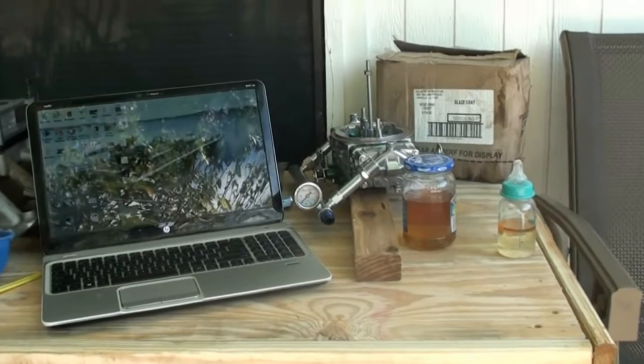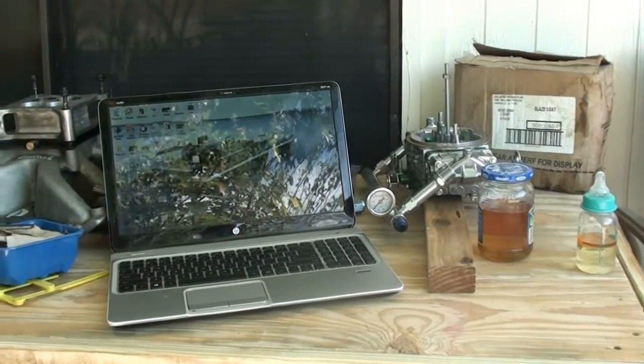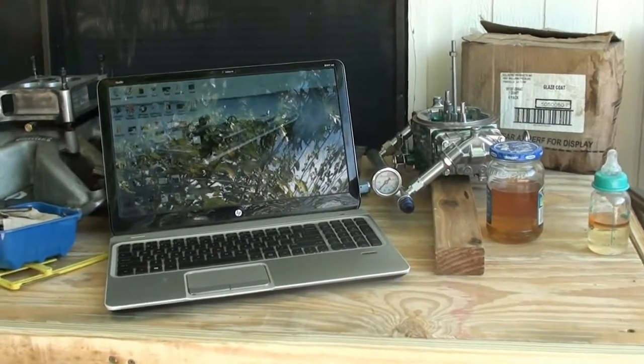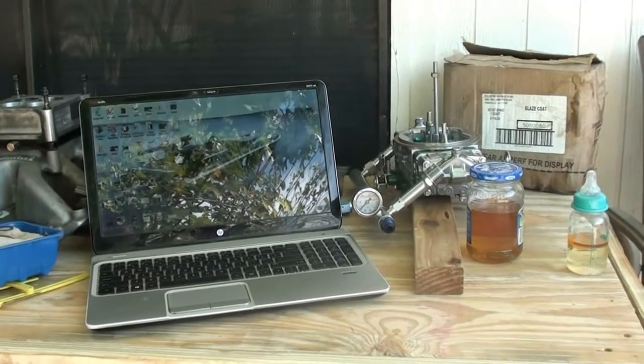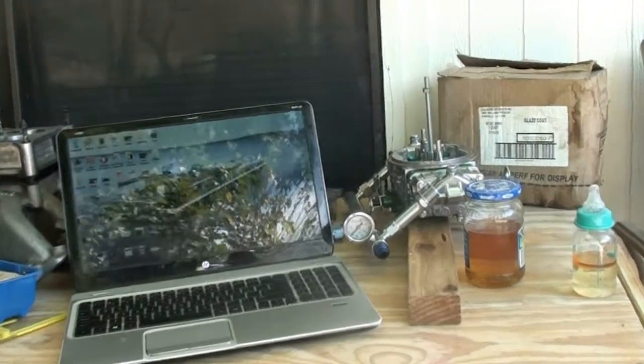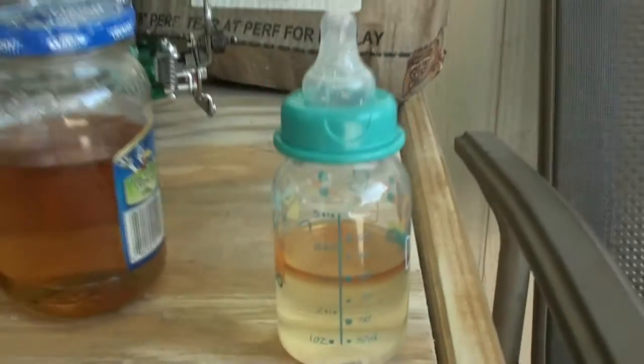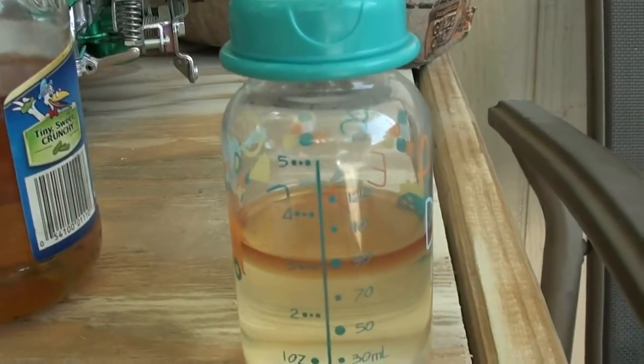Today we're going to do a little tutorial of how to test your E85 for alcohol content for a dollar. Here's how it's done: start off, go to Walmart and get you a baby bottle that's got markings on it, and that costs 98 cents.